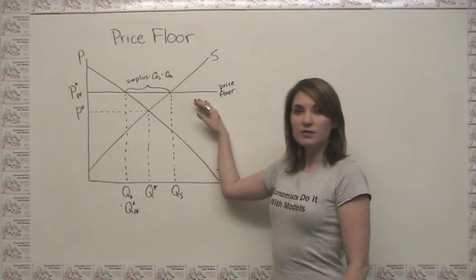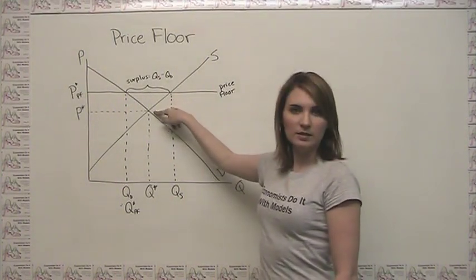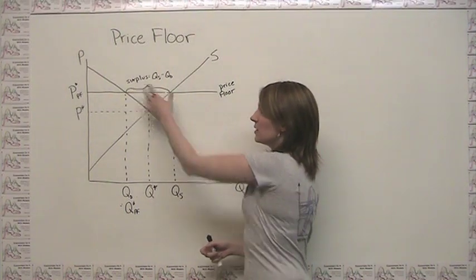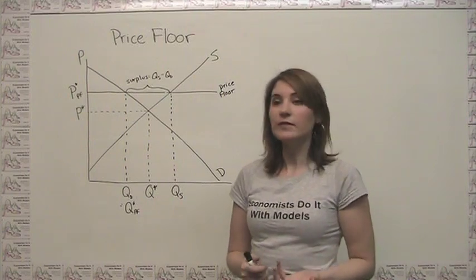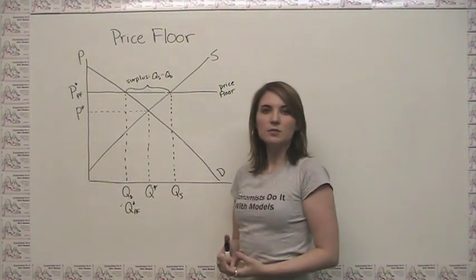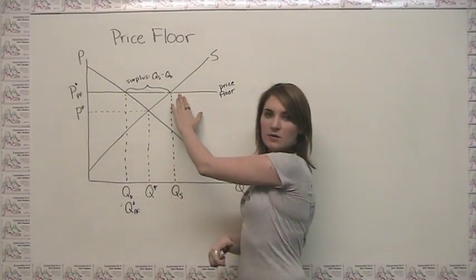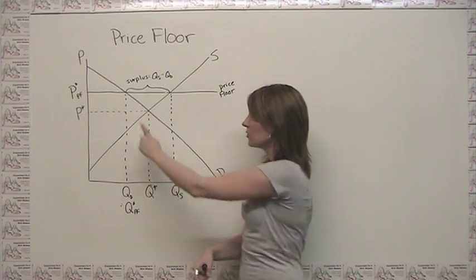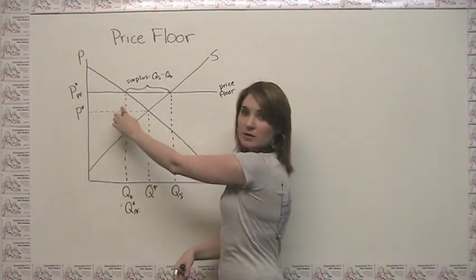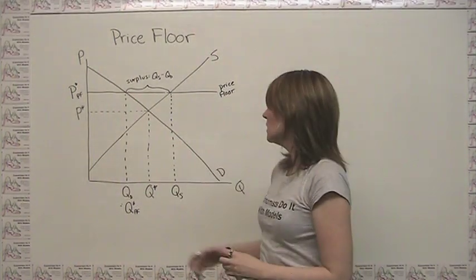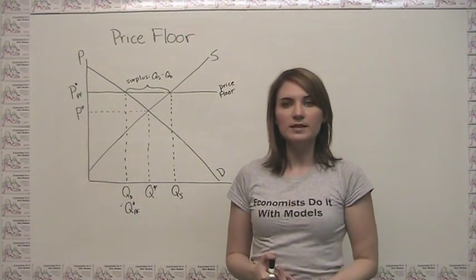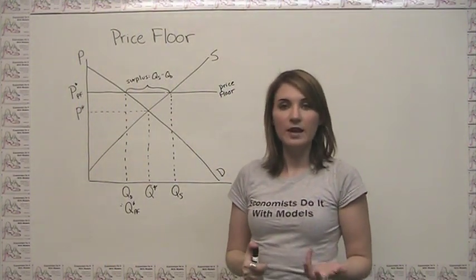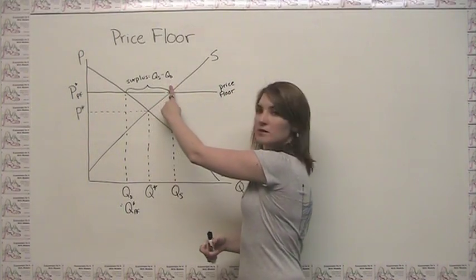Here we're looking at a binding price floor because the price floor is set at a price above the free market equilibrium price. Just as we had with the price ceiling, we're driving a wedge between the quantity demanded and the quantity supplied of our item. In this case, the rules of supply and demand are reversed because at this price that's higher than the equilibrium price, our quantity supplied — where the supply curve meets the price floor — is greater than the quantity demanded, where the demand curve meets the price floor. Rather than generating a shortage as we had with the price ceiling, we instead have a surplus, meaning in a theoretical sense we have extra of the item lying around.